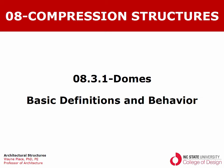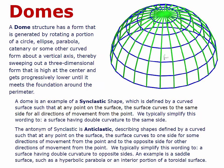Welcome to our first video on domes, in which we're going to focus on basic definitions and behavior. A dome structure has a form that is generated by rotating a portion of a circle, ellipse, parabola, catenary, or some other curved form about a vertical axis, thereby sweeping out a three-dimensional form that is high at the center and gets progressively lower until it meets the foundation around the perimeter.